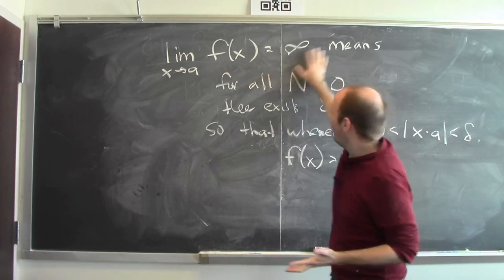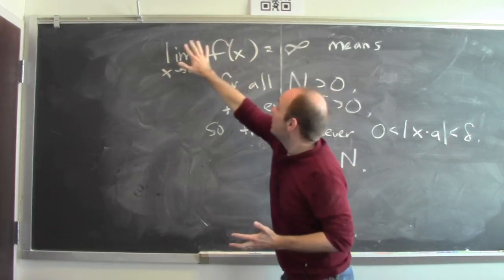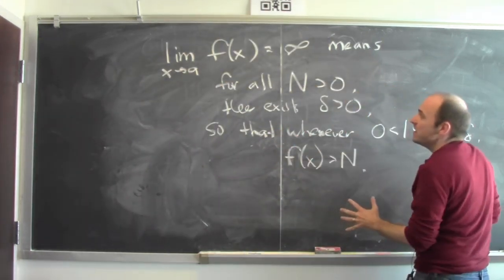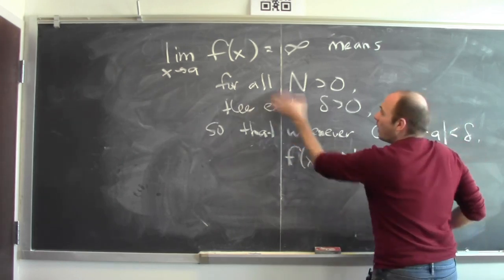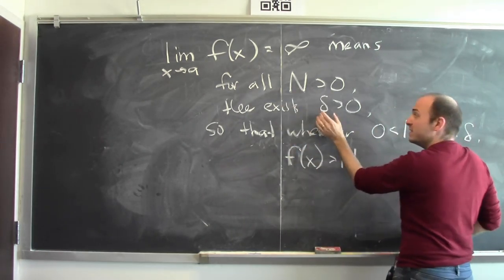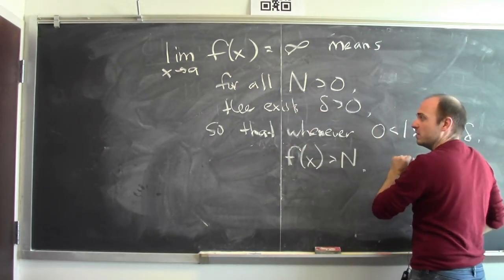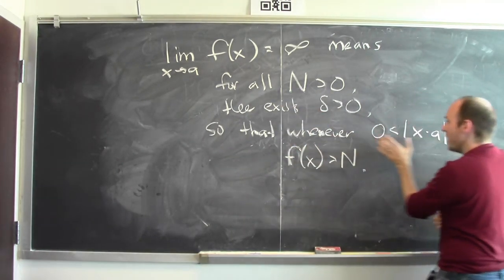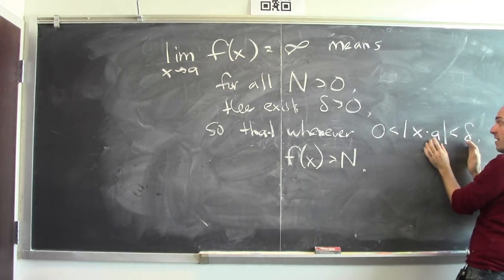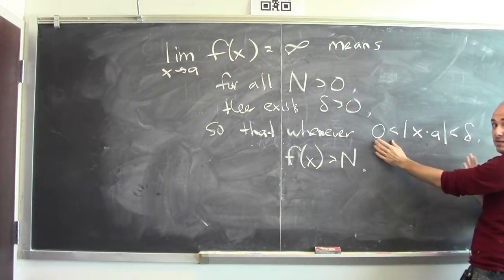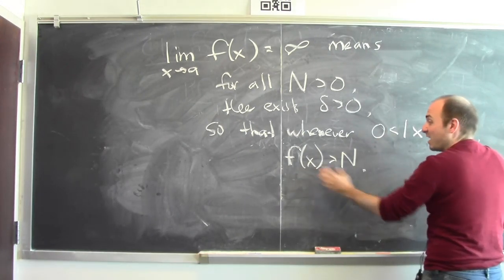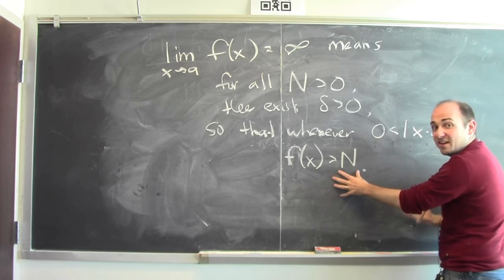What this statement really means is this: for all N greater than 0, there's some delta greater than 0, so that whenever x is within delta of A, and x isn't equal to A, then f(x) is bigger than N.